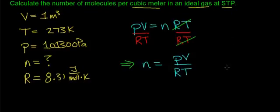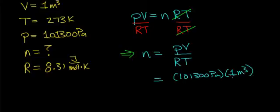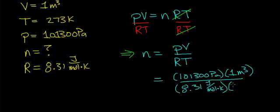And if I can continue with this, now all I need to do is plug in the numbers. The pressure is 101,300 pascals. The volume is 1 meter cubed. The universal gas constant is 8.31.